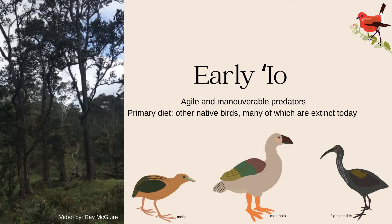Toward the top corner of the slide, there's a forest bird that exists today, the apapane, and it's placed there as a representation of the honeycreeper radiation. Many honeycreepers have gone extinct, and early EO would have predated on these forest birds.